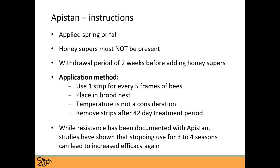The application method is one strip for every five frames of bees — a maximum of two strips for a single, or a maximum of four strips for a double. These are placed in the brood nest, where most of the bees are clustered caring for brood, and where the mites will be. Temperature is not a consideration for Apistan or any of the synthetic acaricides. They are contact strips — bees moving around come in contact with the strips, and the mites on them also come in contact with the chemicals.